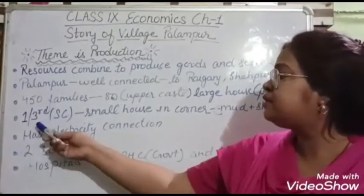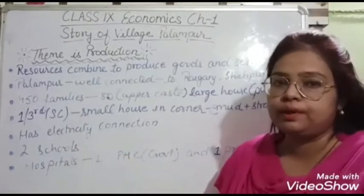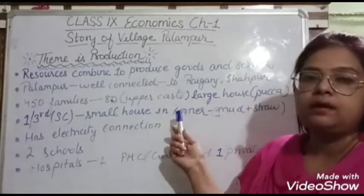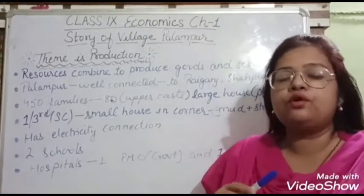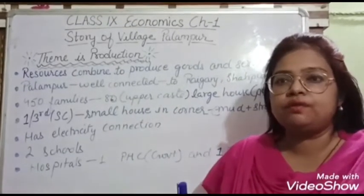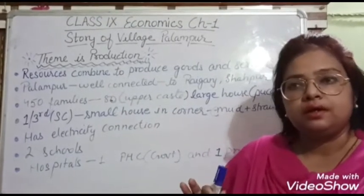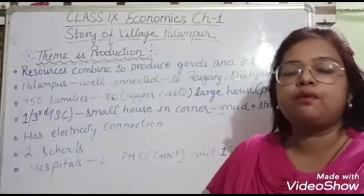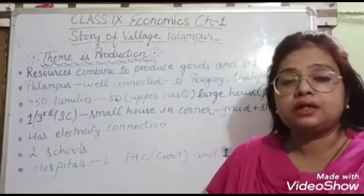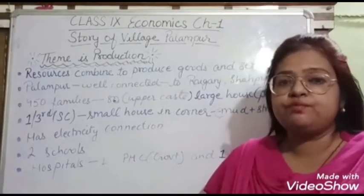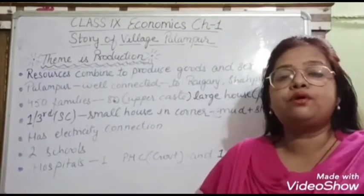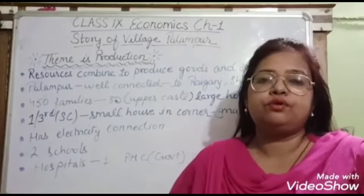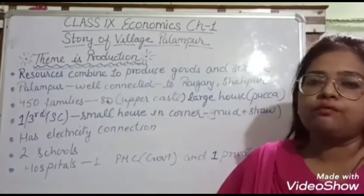In contrast, one third of the population belongs to scheduled caste or scheduled tribe — lower class. They are not scattered all over the village but live in a corner on one side of the village, in their own community or locality. They live in small houses made of mud and straw — kachcha houses or hut-like structures — because they are poor, do not have good job opportunities, and have to live in very small houses at the corner of the village.